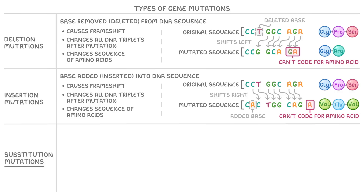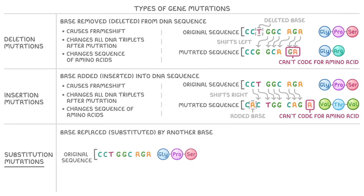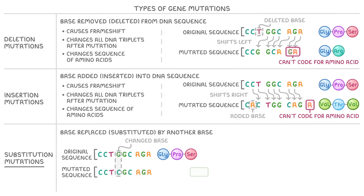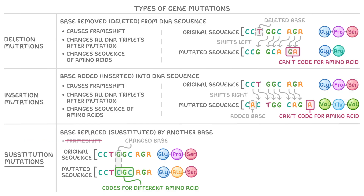Finally, substitution mutations happen when a base is replaced or substituted by another base. There are a few different things that can happen in a substitution mutation. For example, if we changed this guanine into a cytosine, the new DNA triplet of CGC now codes for a different amino acid — alanine — but the other amino acids all stay the same. Importantly, the number of bases also stays the same, so it doesn't cause a frameshift.